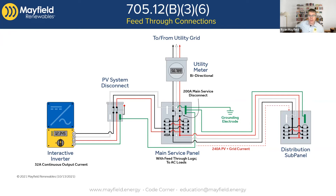This gets right back into the 705.12 B1 rules. It says you can do this and you can have multiple sources of power — you just have to have your downstream equipment rated for that value.